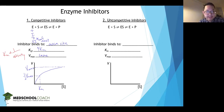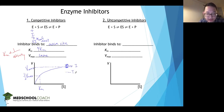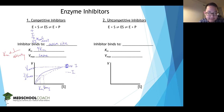Another way to think about it: if you have a billion substrate molecules and only 10 inhibitor molecules, the enzyme is essentially covered with substrates and will never reach the inhibitor. Drawing the Michaelis-Menten curve, the dashed line with the competitive inhibitor shows the same Vmax but an increased KM value, as we discussed.